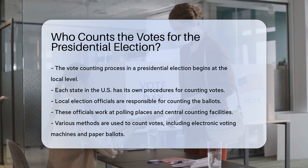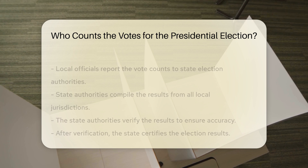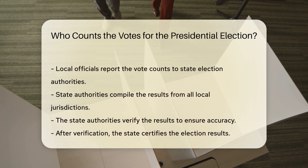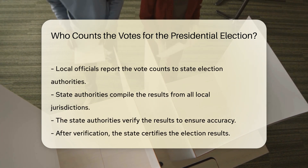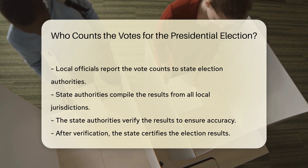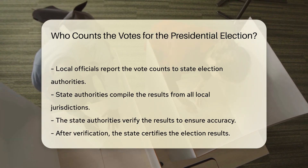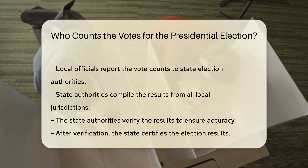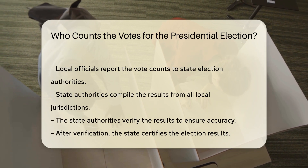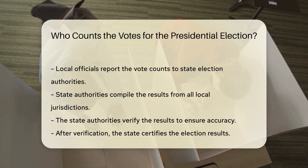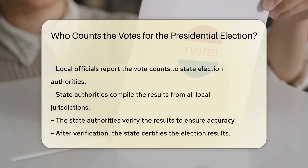Once the local officials have counted the votes, they report the results to state election authorities. These state authorities then compile the results from all local jurisdictions. The state authorities verify the results to ensure accuracy, and after verification, the state certifies the election results.